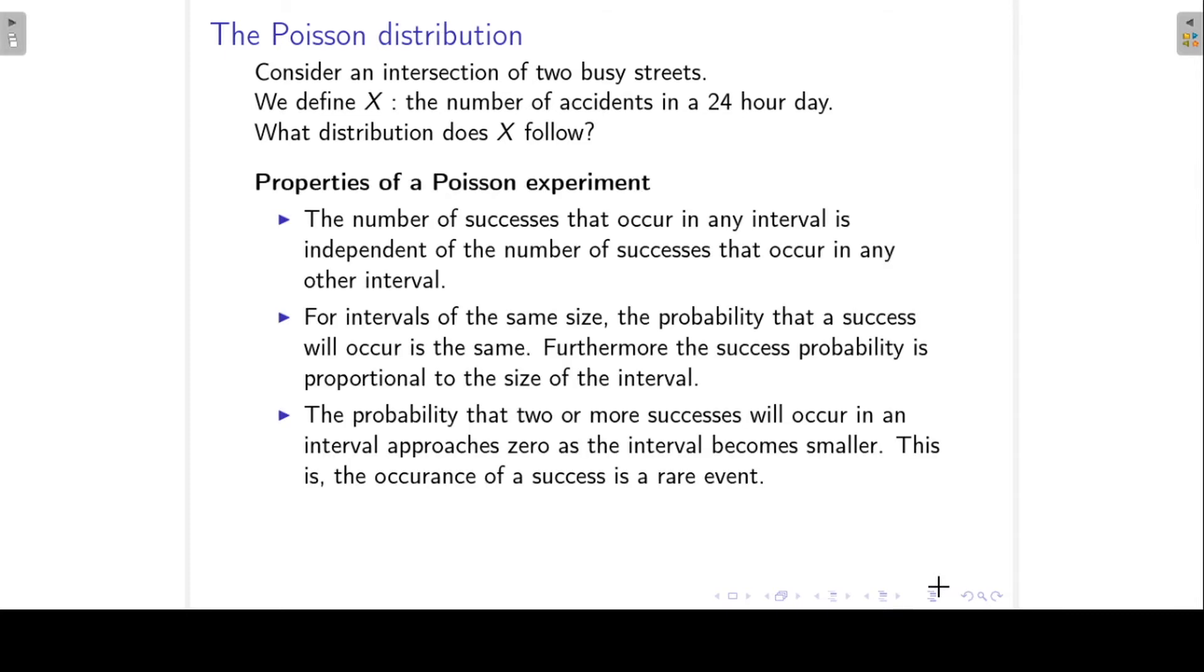What are the properties of a Poisson experiment? The number of successes that occur in any interval is independent of the number of successes that occur in any other interval. So the interval in our example will be a 24-hour day, and the number of successes, which in this case will be the number of accidents. The number of accidents today will not influence the number of accidents tomorrow or in a week's time.